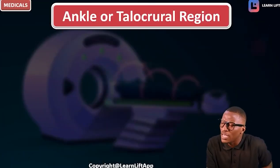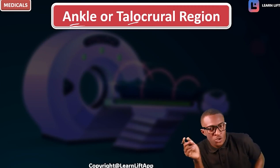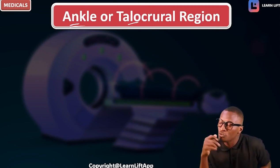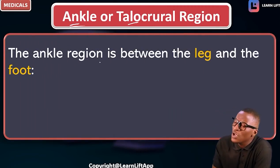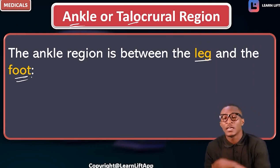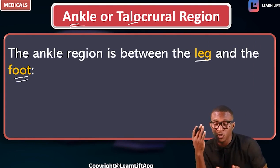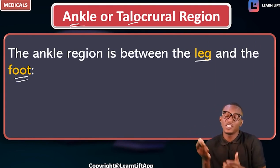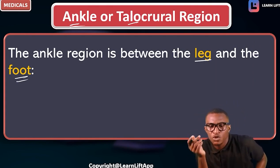Now let's talk about the ankle, also called the talocrural region. The ankle region is between the leg and the foot. Picture the leg, picture the foot — that joint between them is called the ankle region.